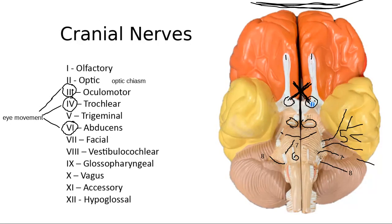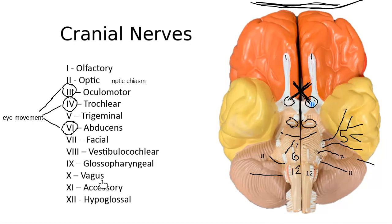Cranial nerve number nine, the glossopharyngeal nerve — number nine is on the outside, number twelve is in the middle. Cranial nerve number ten is the vagus nerve. Vagus means wandering — this nerve goes all the way down into the abdomen and helps control digestive system organs, starting in the upper neck and wandering down. That's why it's called the vagus nerve.